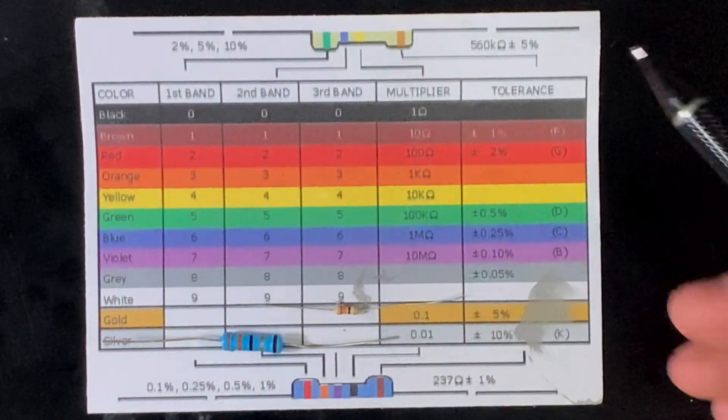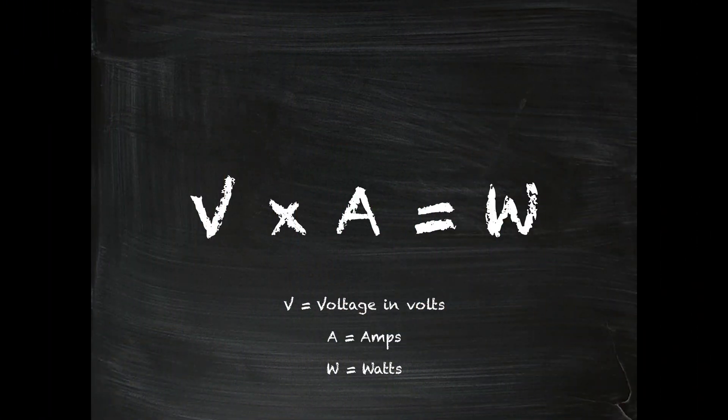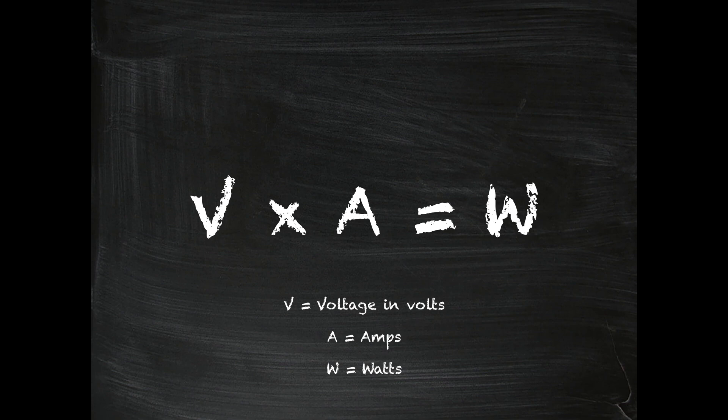So you're going to need one more equation if you're going to run a lot of LEDs, just to see how many watts are actually going to go through the resistor. So you take the input voltage of your battery, multiply it by how many amps your LEDs are pulling, and that's going to give you your watts.